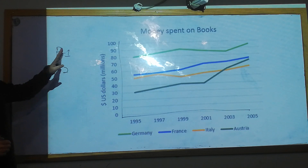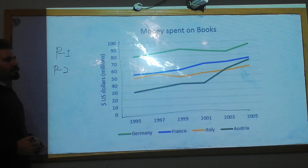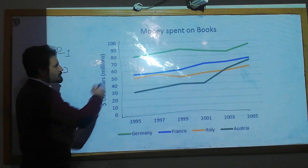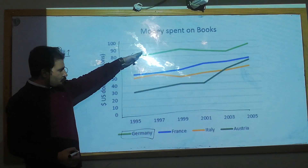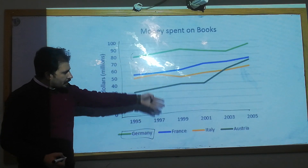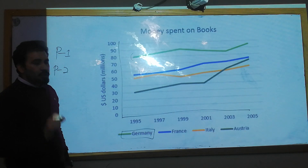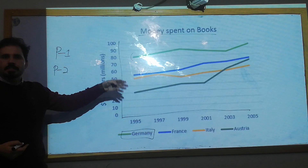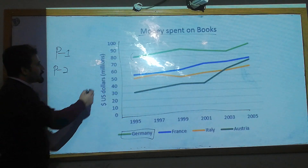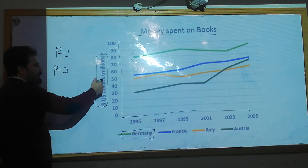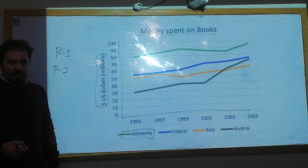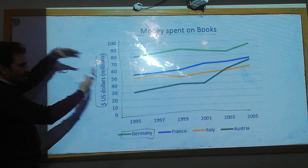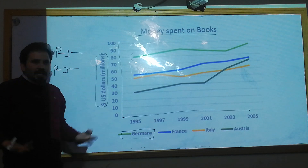Before writing down something, you should spend some time looking at the graph carefully and trying to get some information from it. In this graph, the green line is for Germany. We also have France and Austria — four countries in total — and the chart shows money spent on books by these four countries, measured in US dollars in millions. We need two paragraphs.